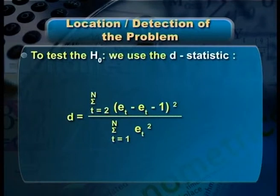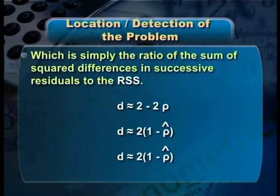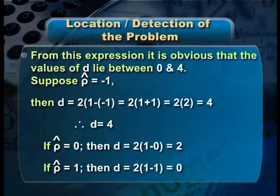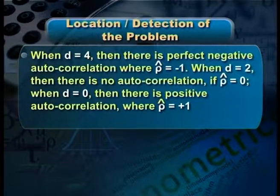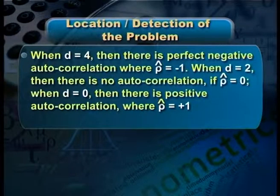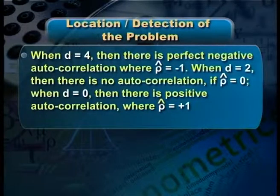By mathematical manipulation and expanding the equation, we get d ≈ 2 − 2ρ̂, or equivalently d ≈ 2(1 − ρ̂). From this expression, Durbin-Watson d values lie between 0 and 4. If ρ̂ = −1, d = 4. If ρ̂ = 0, d = 2. If ρ̂ = +1, d = 0. When d = 4, there is perfect negative autocorrelation; when d = 2, there is no autocorrelation; when d = 0, there is perfect positive autocorrelation.